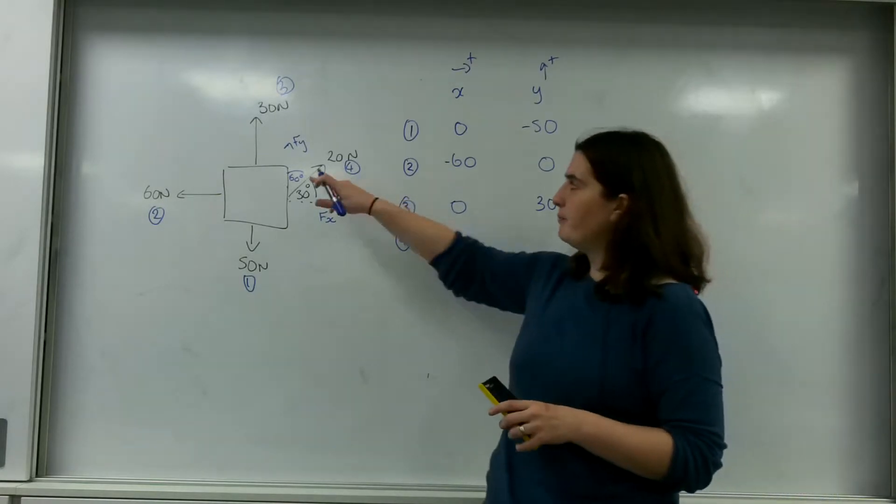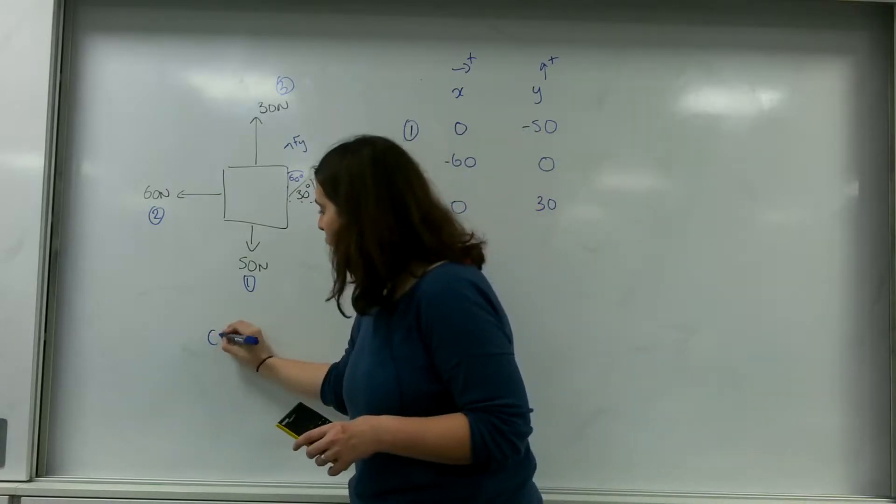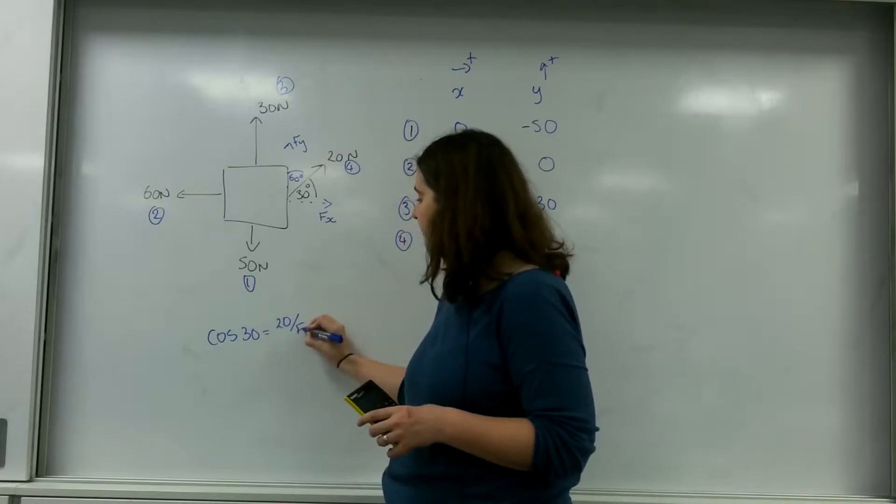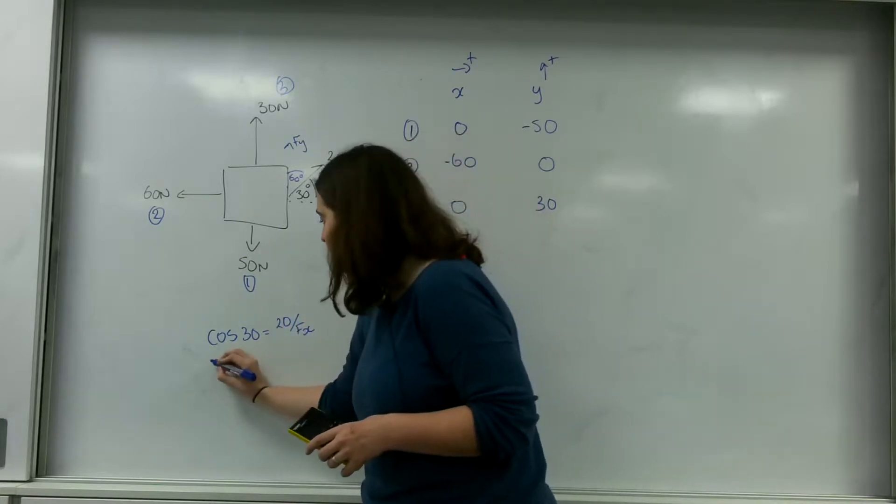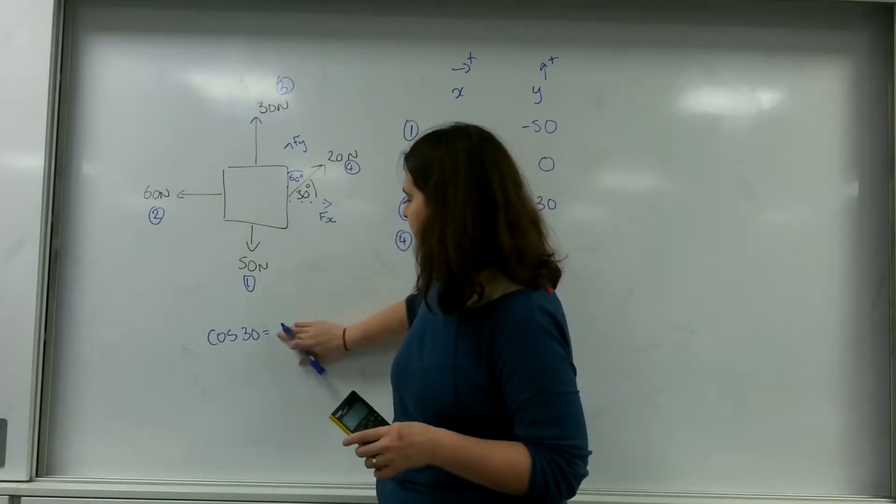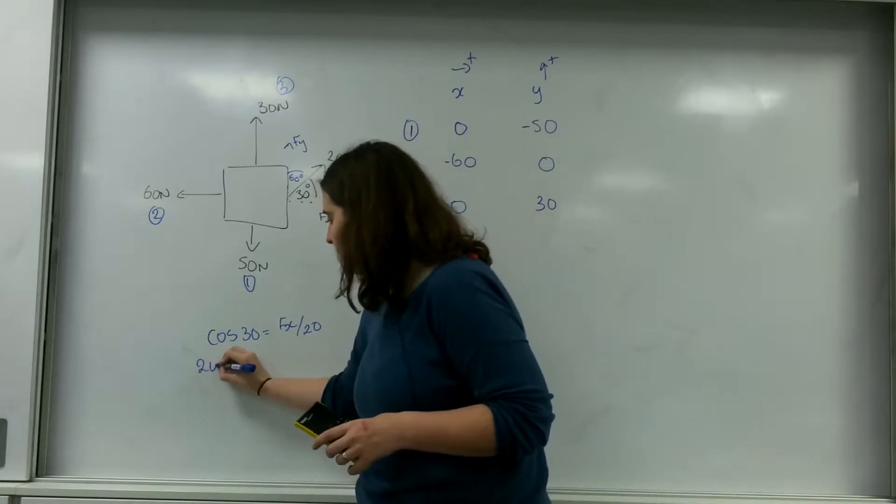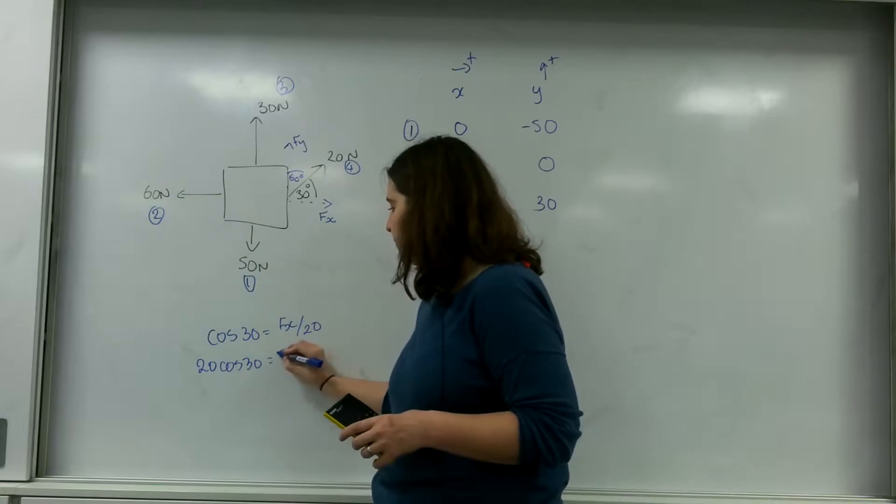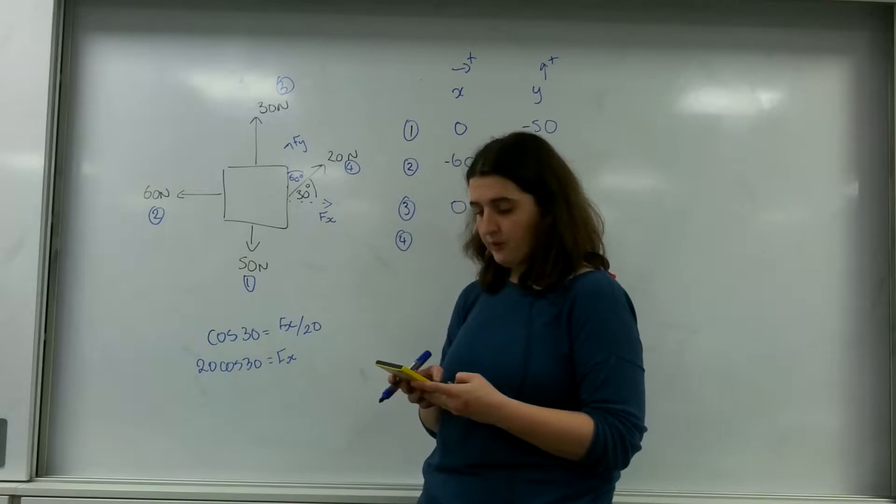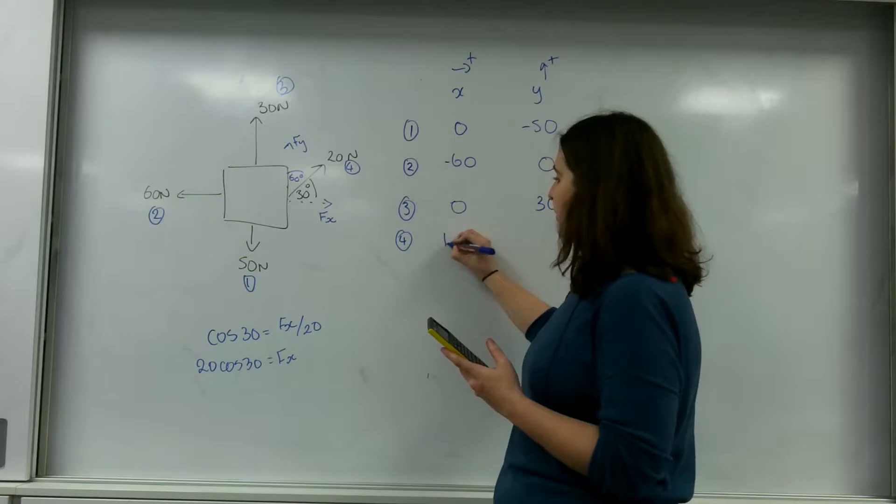Number three is working nothing in the x axis but positive 30 in the y axis. Now this one I need to find the components. So cos 30 equals... fx over 20. So 20 cos 30 equals fx.